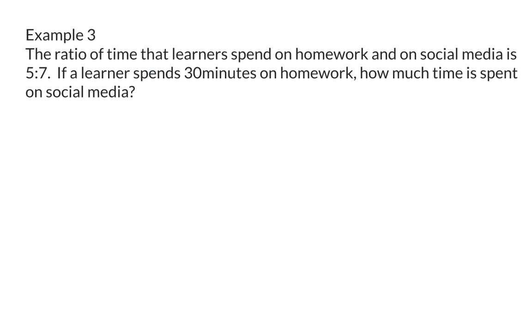Example 3. The ratio of time that learners spend on homework and on social media is 5 to 7. If a learner spends 30 minutes on homework how much time is spent on social media? When a ratio is given the first part that is mentioned is also the first part in the ratio, in our case homework, and the second part mentioned, social media in our case, will then be the second part of the ratio and that is 7.